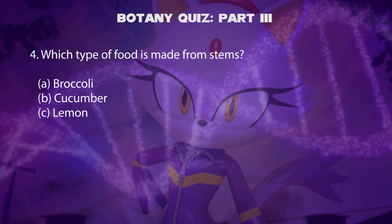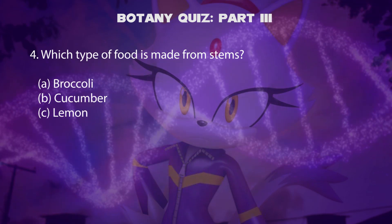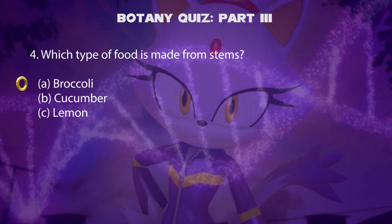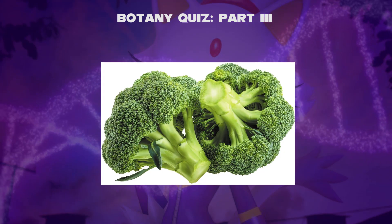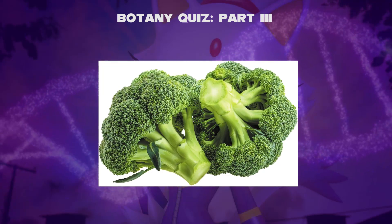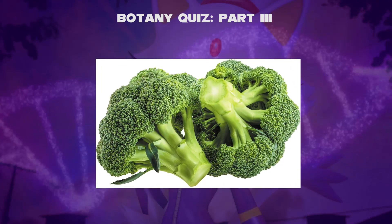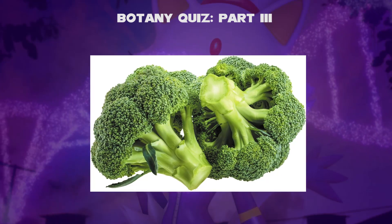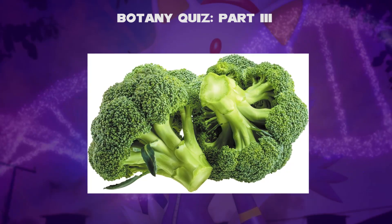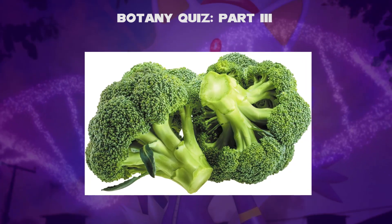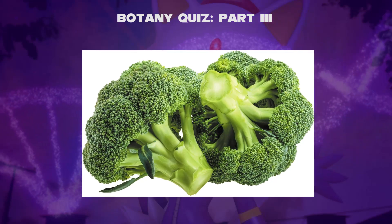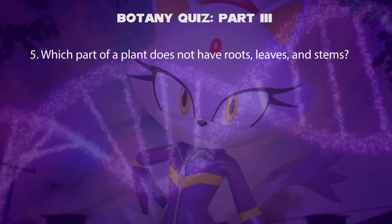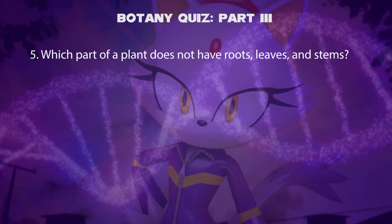Fourth question: which type of food is made from stems — is it broccoli, cucumber, or lemon? The answer is broccoli. Broccoli is an edible green plant vegetable in the cabbage family, made from stems. The vegetable is rich in vitamin C and K, dietary fiber, and various nutrients, making it a popular choice for a healthy diet. You can also find other stem foods like asparagus, celery, and potatoes.